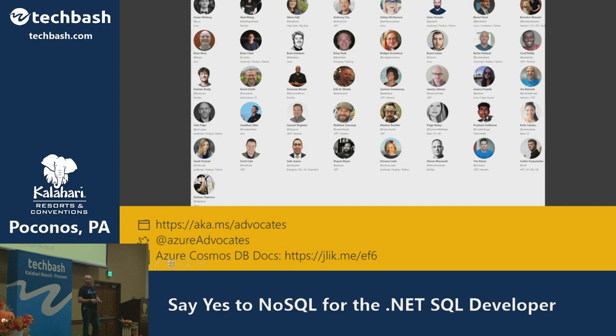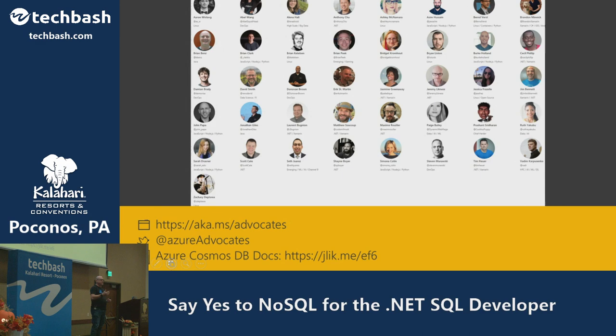The cloud developer advocate team is a global team. We have individuals who specialize in different areas — from Linux to containers, front-end development, machine learning, and .NET. We focus on what I call the three C's: community, content, and connection with engineering. We meet developers where they're at, provide the best documentation experience with blog posts and videos, and we're an engineering team — not marketing. If you have a problem, it's my job to go back to the team working on that technology and make sure we address it.